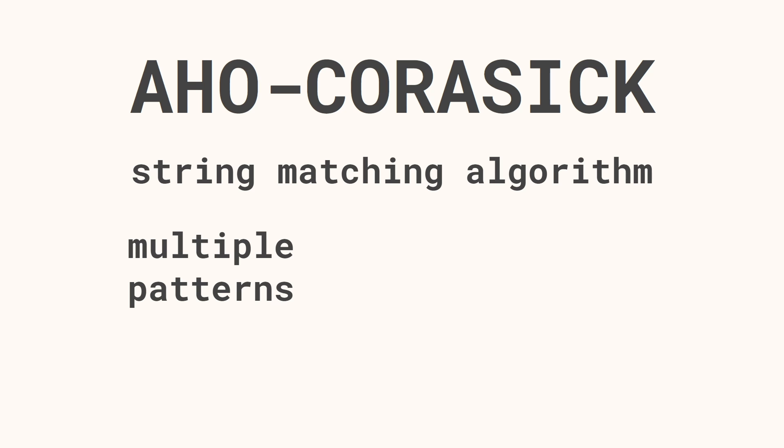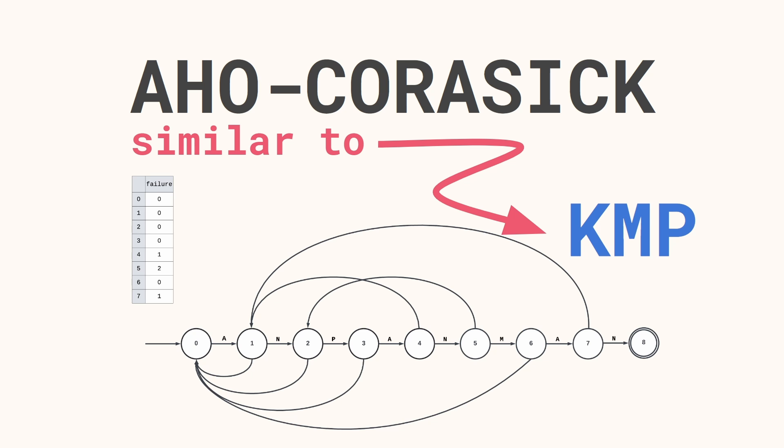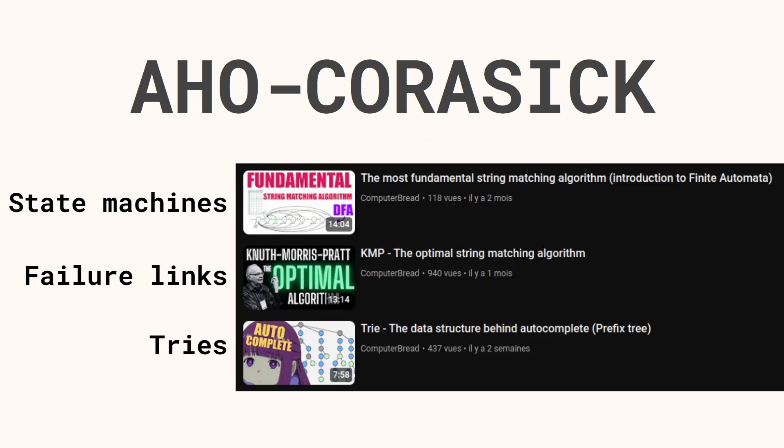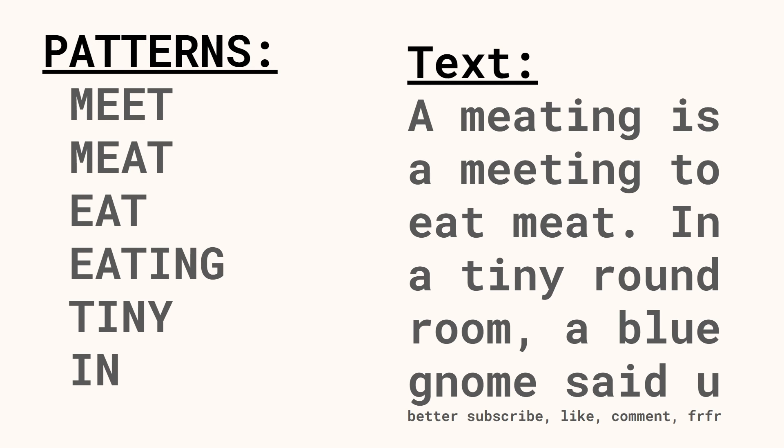The Aho-Corasick algorithm is quite similar to the KMP algorithm. Even though I try to make this video self-contained, I use some ideas defined in my previous videos, so if you're having a hard time please consider watching them — it will 100% help and make this video extremely easy to understand. We have a list of patterns we want to find in a text.